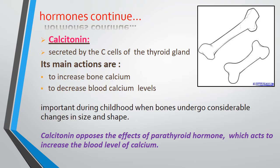Calcitonin is very important and essential in childhood because at that time bone undergoes considerable changes in size and shape. Calcitonin has the opposite action of parathyroid hormone — calcitonin absorbs calcium from the blood and deposits it into bone, while the parathyroid hormone's main action is to increase the calcium level in the blood.